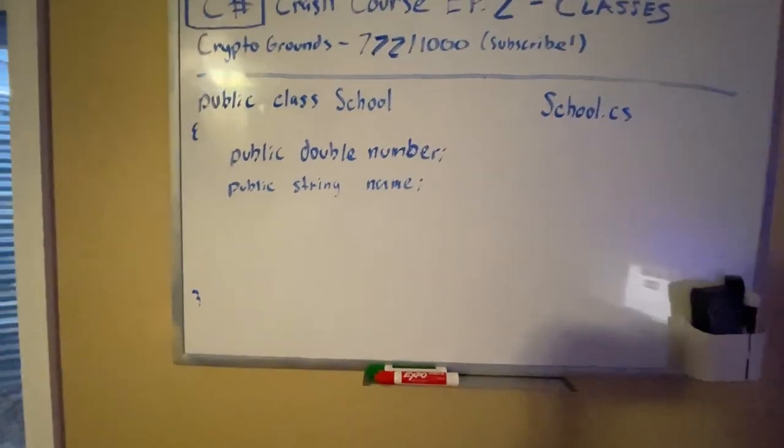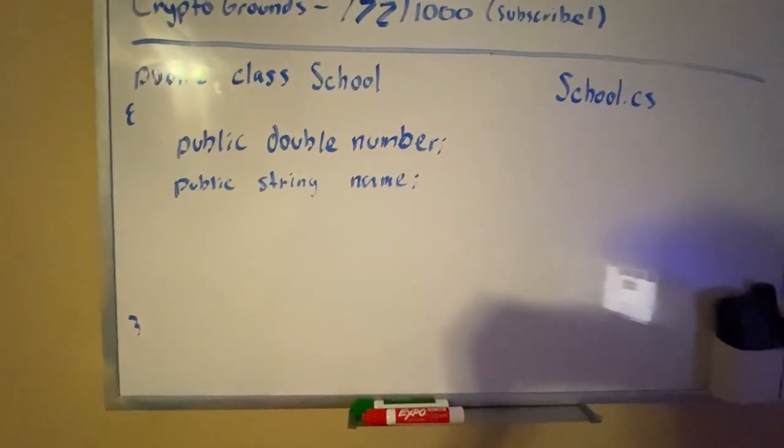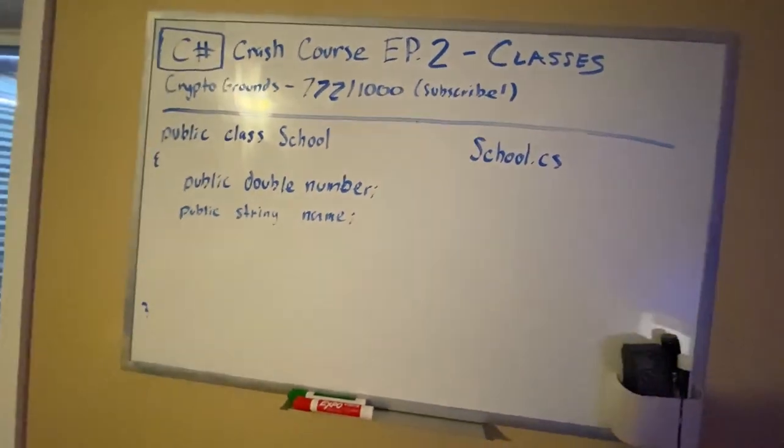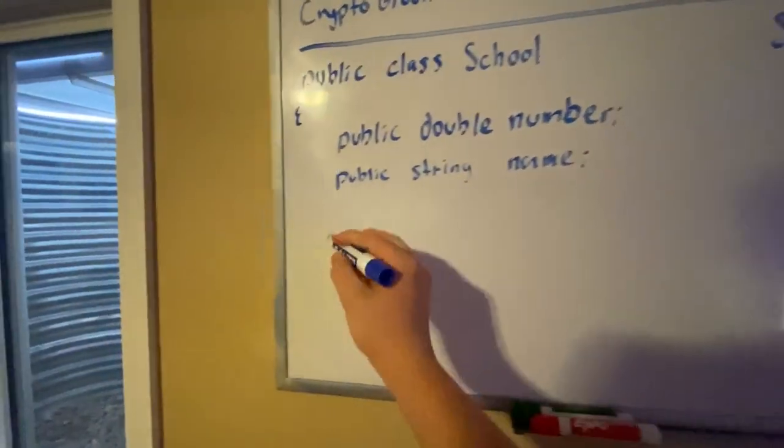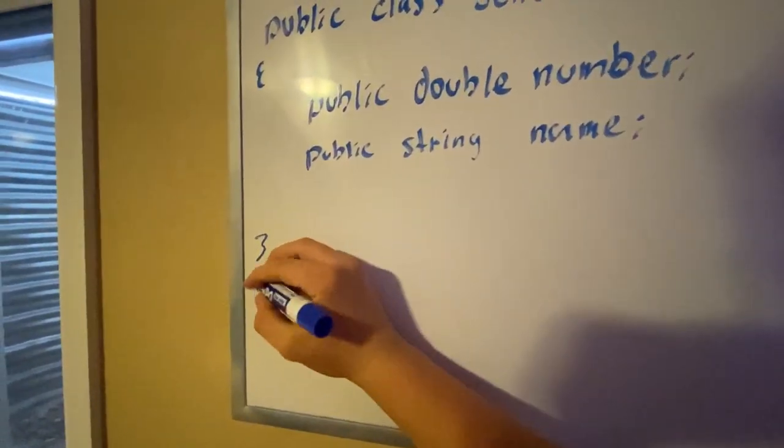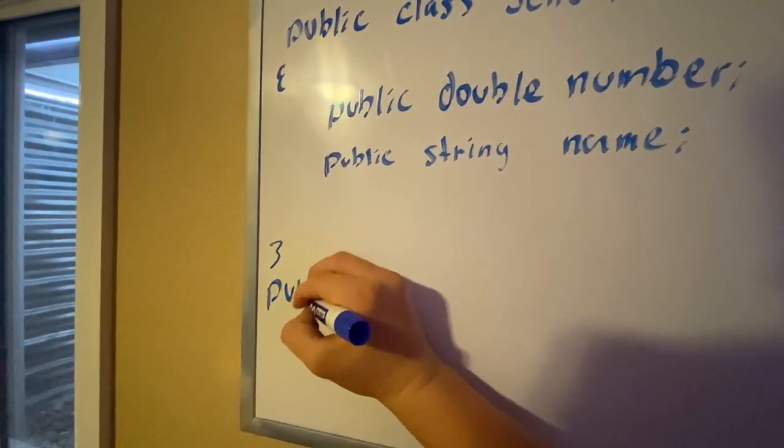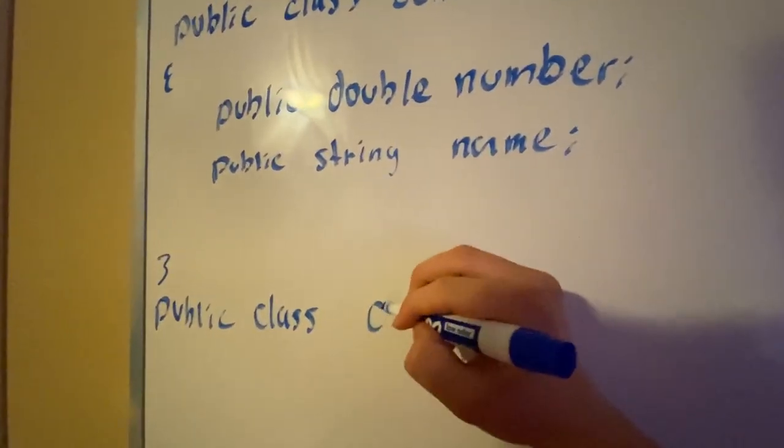And so on. That's it. Now, if you're going to create an object out of a main class like this, let's move this up here. What we can do is something like this: let's create another class, public class Classroom.